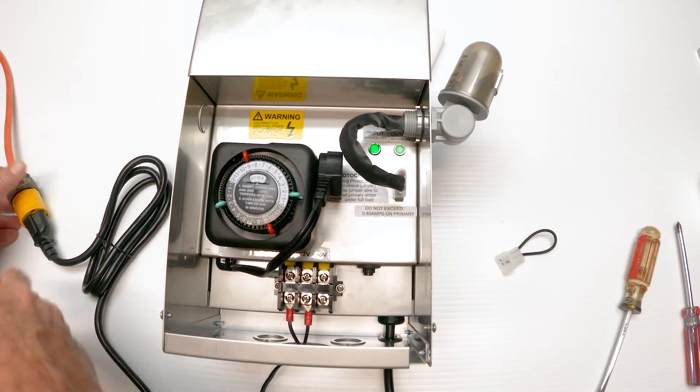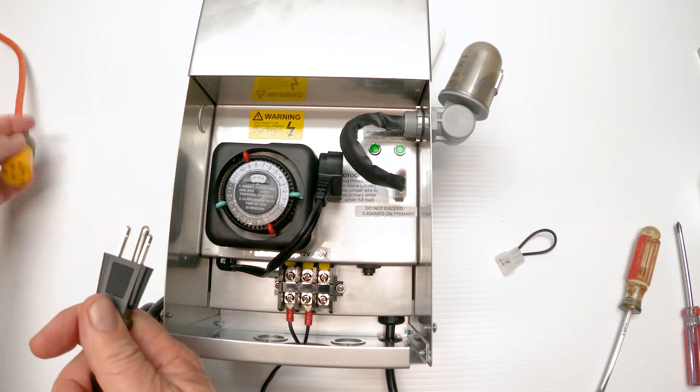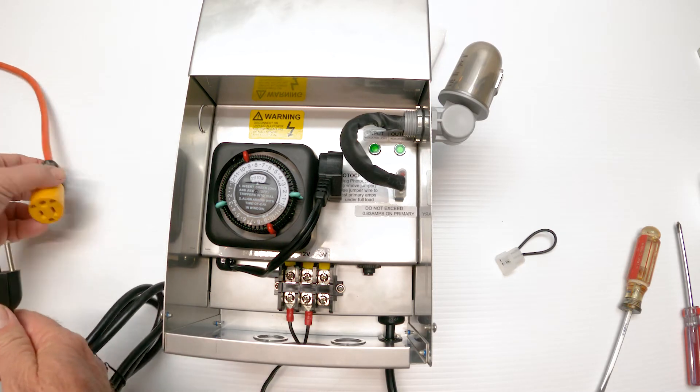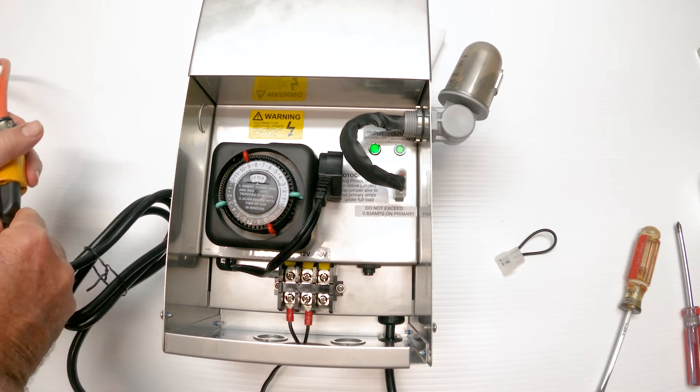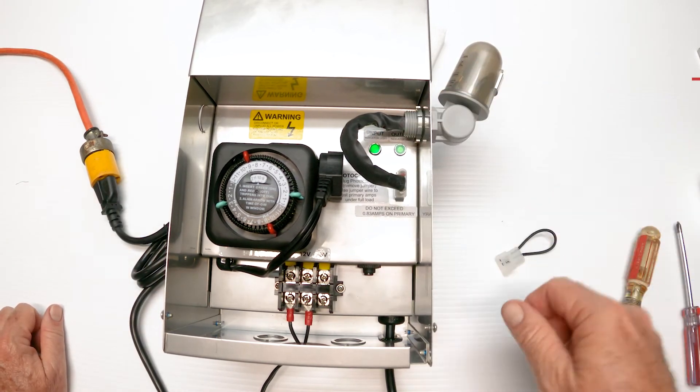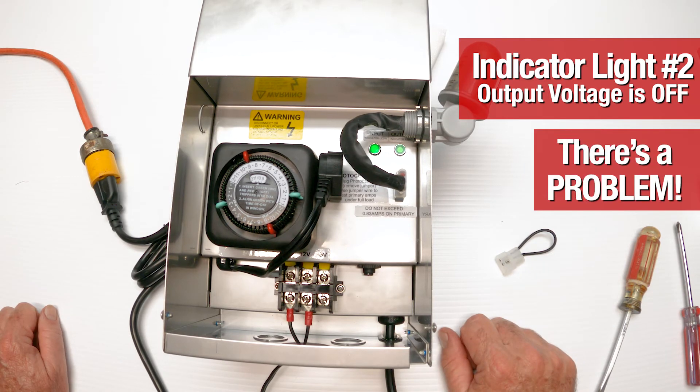If this little light wasn't on, that means it's not plugged in or the circuit it's coming from isn't working or there's a problem upstream. So I have it plugged in and I know with that green light that I got power right here. Now the second light, the output light is not on. This unit is not producing 12 volts. There is a problem.